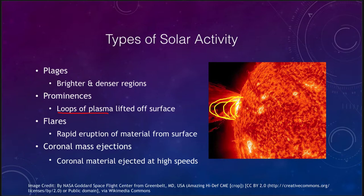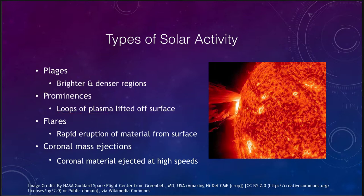When the magnetic field does that, it does not necessarily throw the material off the sun — it comes up and then essentially rains back down onto the sun, falling back down to the surface, never leaving the sun itself. But we can have more intense regions of this, which we call solar flares.